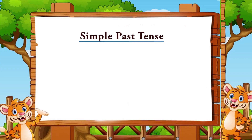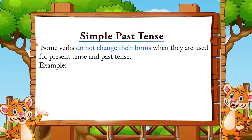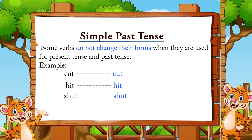There are some verbs that do not change their forms when used for present tense and past tense. Examples: cut → cut, hit → hit, shut → shut, put → put, quit → quit.